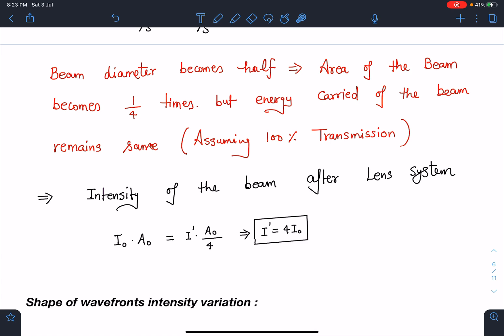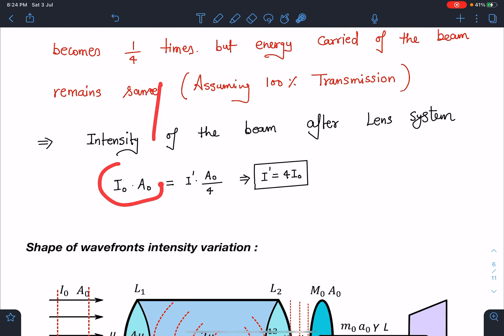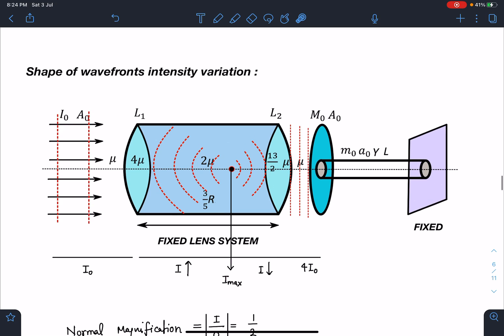Beam diameter becomes half and area of the beam becomes one-fourth times. But the energy carried by the beam remains same. We are assuming 100% transmission, that means there is no loss at any surface. So in that case, intensity of beam after the lens system, after passing through the two lenses: initially this energy incident is I₀A₀ and finally this is I'·A₀/4. So I can say the new intensity finally after refraction from both the lenses is 4I₀.